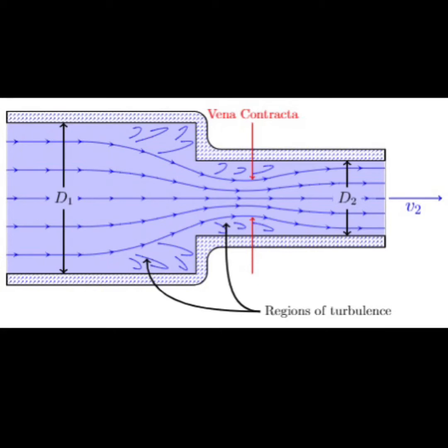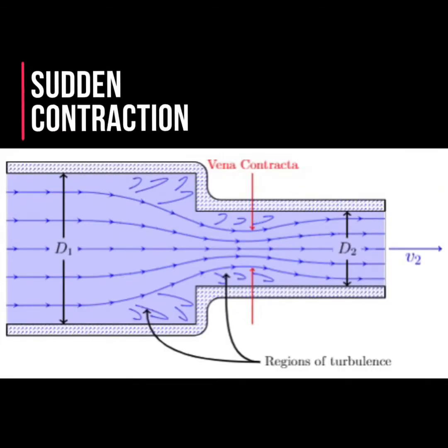Minor losses in pipes are due to sudden expansion, sudden contraction, bending in pipe, pipe fittings, obstruction in pipes, etc. Today we'll be doing an experiment on sudden contraction.